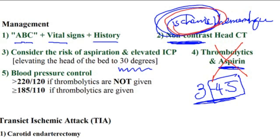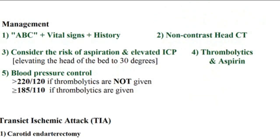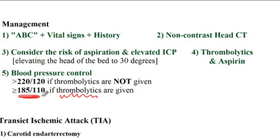The next step is to check blood pressure. If no thrombolytics have been provided, the blood pressure goal should be less than 220 over 120 mmHg. However, if thrombolytics were provided, since they increase the risk of hemorrhage, the blood pressure goal should be less than 185 over 110.